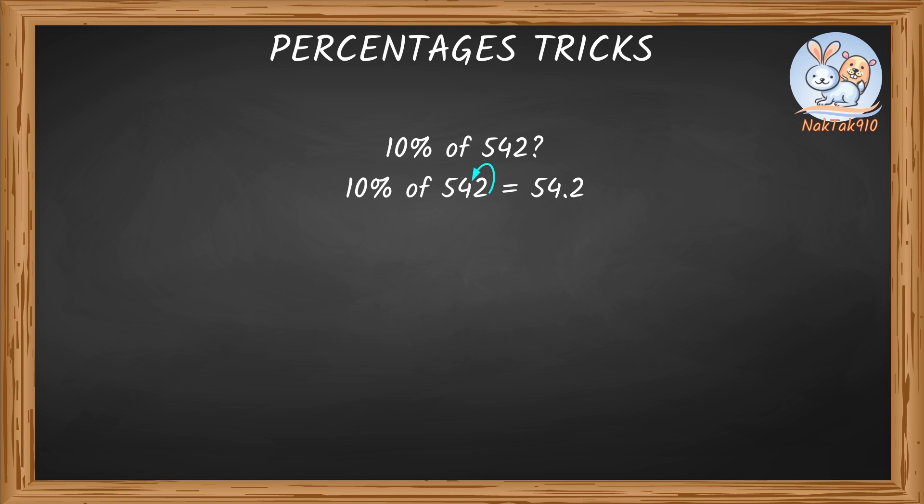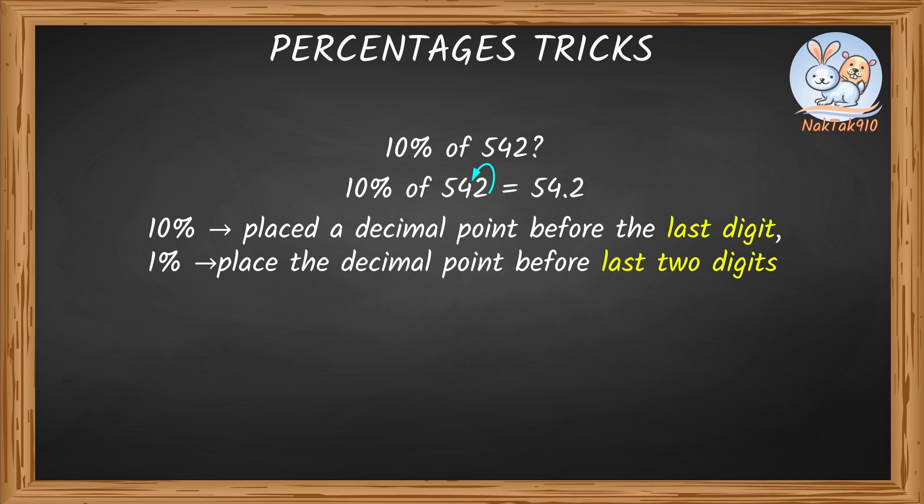There is even a simple trick to find 1% of any number. In this case, finding 10% of a number, we place the decimal point before the last digit. In this case, we need to place the decimal point before the last two digits. 2 and 3, so 1% of 123 is 1.23. Let's check this with our calculation. 1 by 100 times 123. 1 times 123 divided by 100. 123 divided by 100, which gives us 1.23.